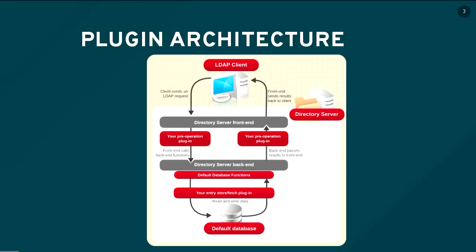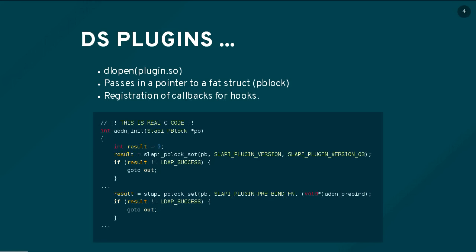A directory server plugin is a bunch of C code which is a shared object that we dlopen at some point. All plugin functions have to be generic — they all take in what we call the pblock, the parameter block. It's a huge struct; if you've ever looked at a 712-byte struct definition containing multiple nested structs of similar size, it's pretty horrifying. Every single function callback takes this parameter block which tells the plugin what's happening: was it called as a pre-operation? Is it a bind attempt, a search, a write? We also register callbacks by poking function pointers into the parameter block and giving them back to directory server.